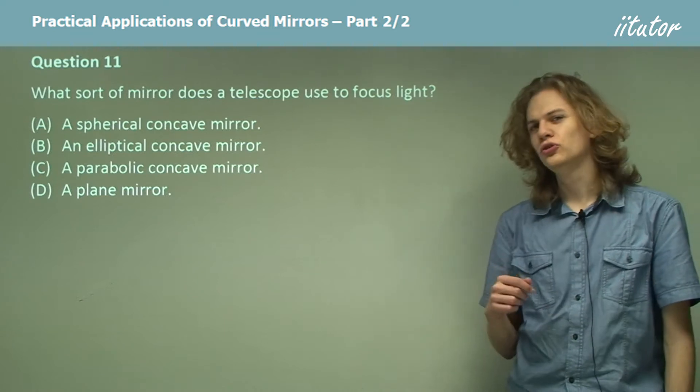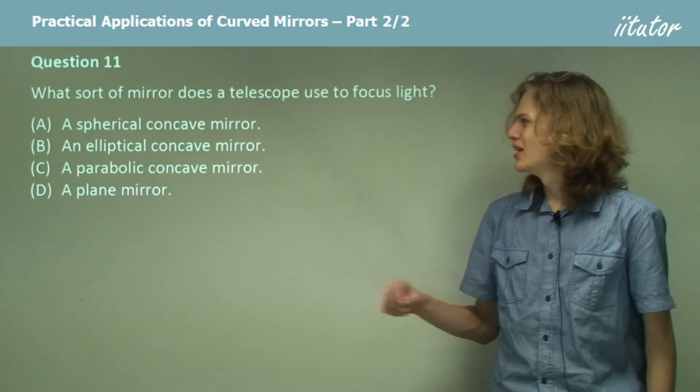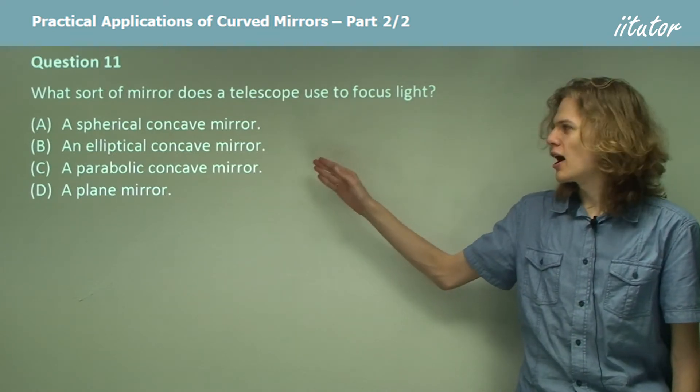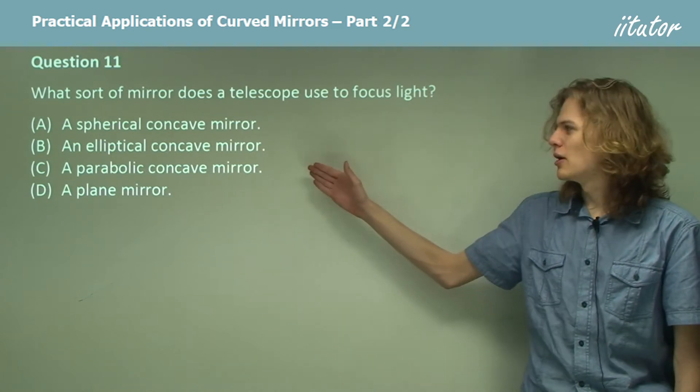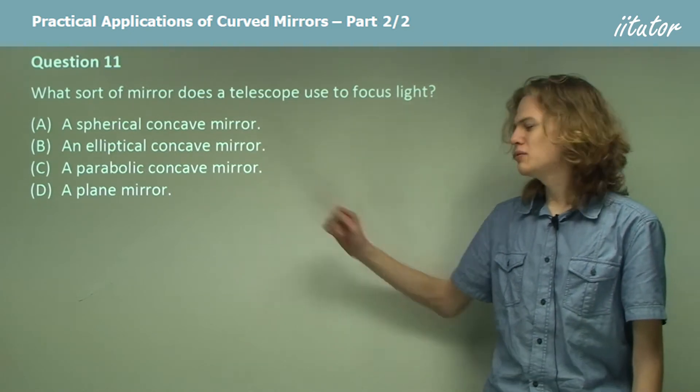What sort of mirror does a telescope use to focus light? Is it a spherical concave mirror, an elliptical concave mirror, a parabolic concave mirror, or a plane mirror?